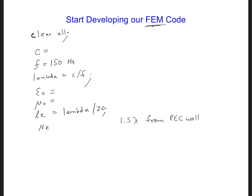So ne, the number of elements, will be 30 to start with. That means the number of nodes will be, we'll just say ne plus one, that way if we ever change ne, nn will automatically change.